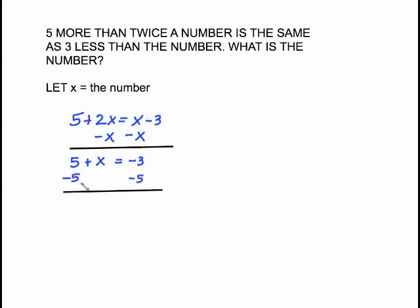All we have to do now is subtract 5 from both sides and we have x equals negative 8 because these are both negative. Keep the negative sign and add.